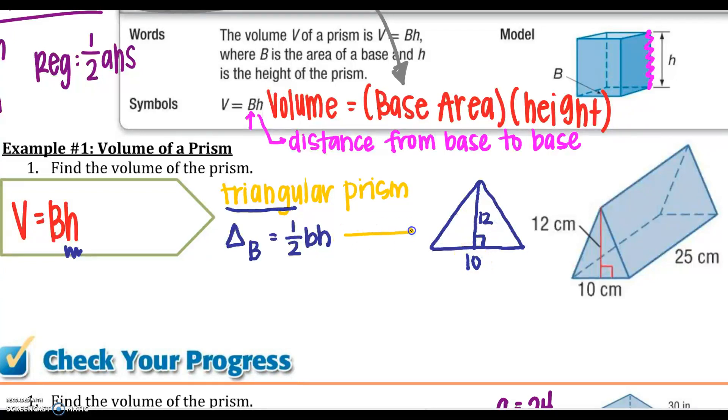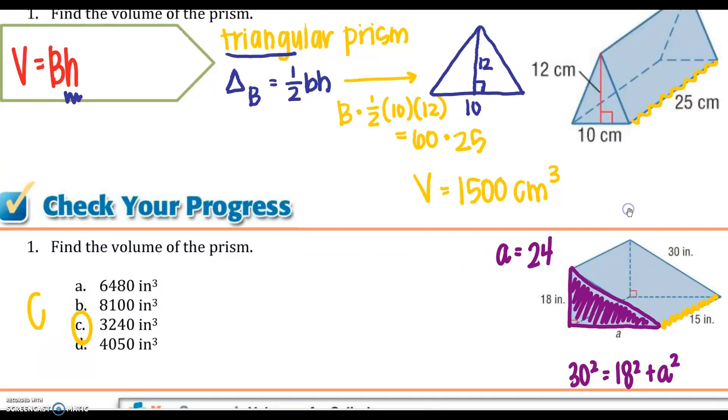From that triangle, I am going to find my big B. My big B is one half 10 times 12. That would give me 60 times my H. The distance from triangle to triangle is 25. My volume is going to be 1,500 centimeters cubed. Here is your check your progress. Make sure you show all of your work for this to be completed.